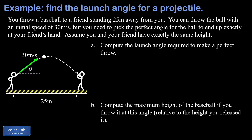In this video, we're looking at a particularly challenging projectile motion problem. The setup is that we have one person throwing a baseball with a known initial speed of 30 meters per second, trying to achieve the perfect throw where the ball lands 25 meters away exactly at their friend's hands, which are at the same height as the release of the ball.